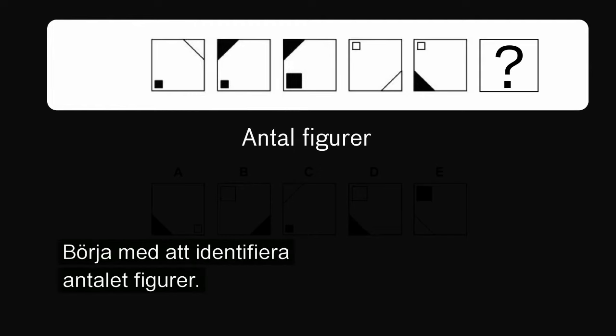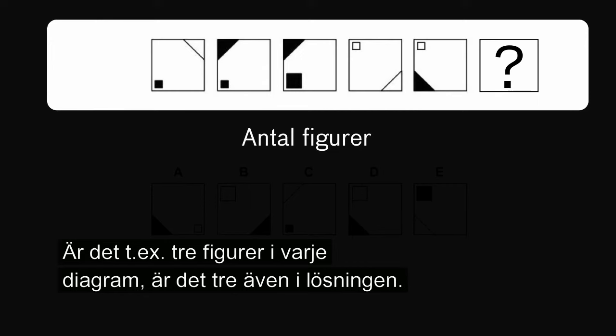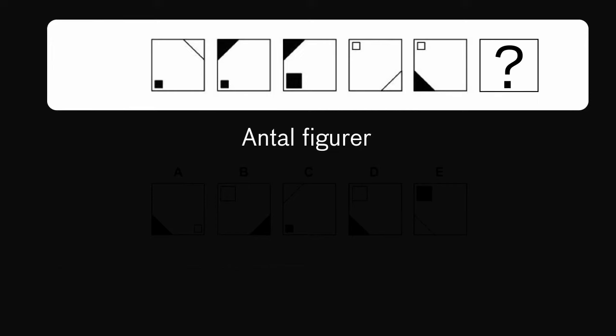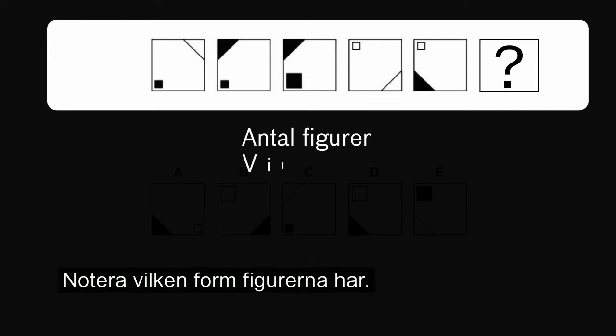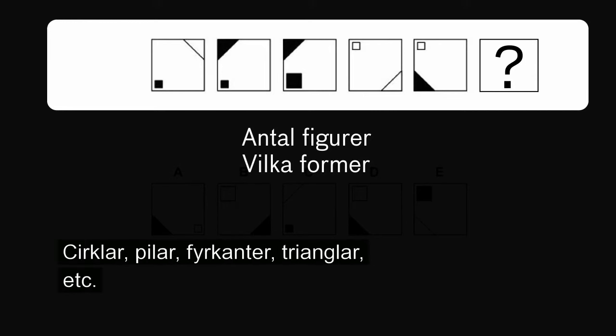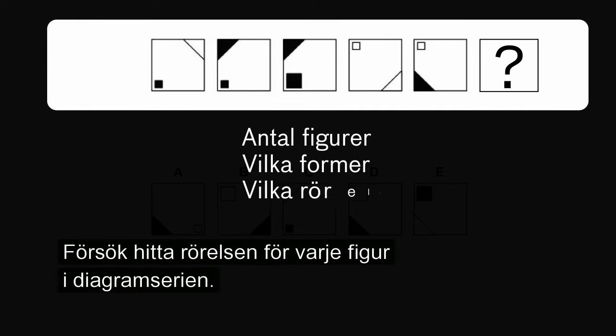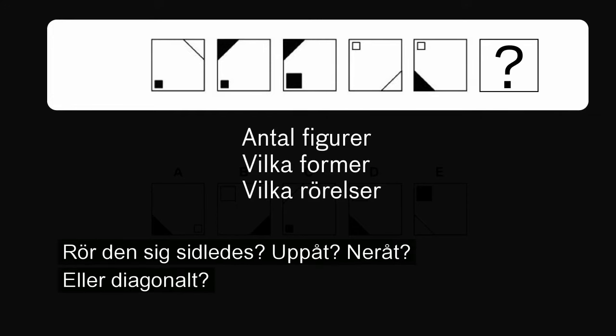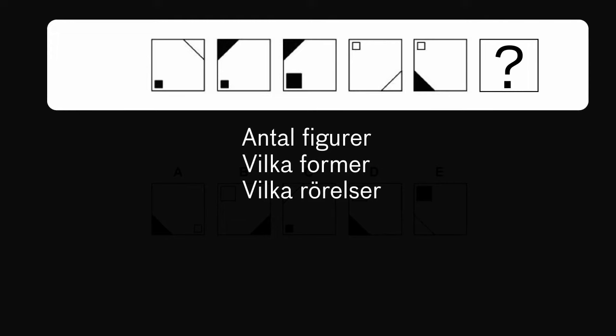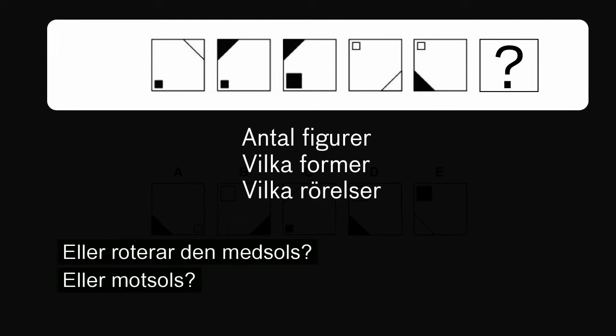För att lösa uppgiften behöver du gå metodiskt tillväga och identifiera de regler som gäller. Börja med att identifiera antalet figurer — är det tre figurer i varje diagram så är det också tre i lösningen. Notera vilken form de olika figurerna har: cirklar, pilar, fyrkanter, trianglar etc. Försök hitta rörelsen för varje figur — rör den sig sidledes, uppåt, nedåt, diagonalt, eller roterar den med eller mot sols.